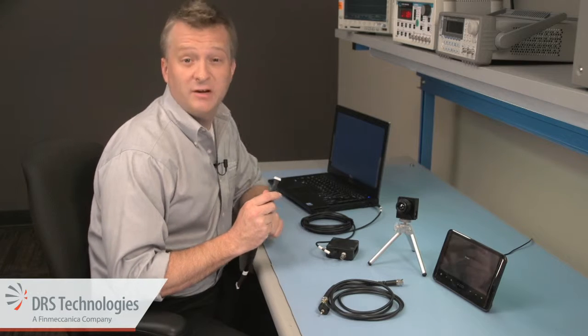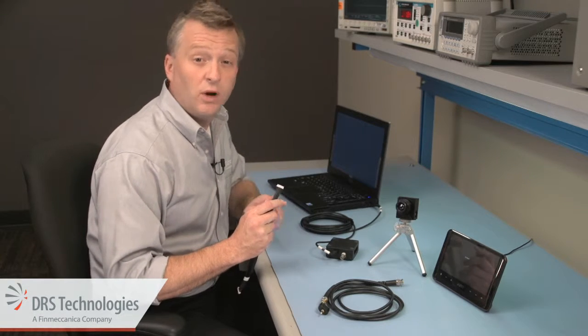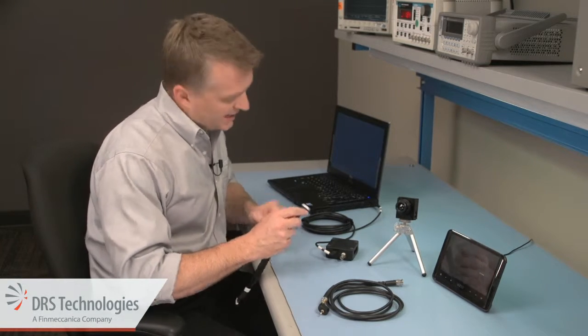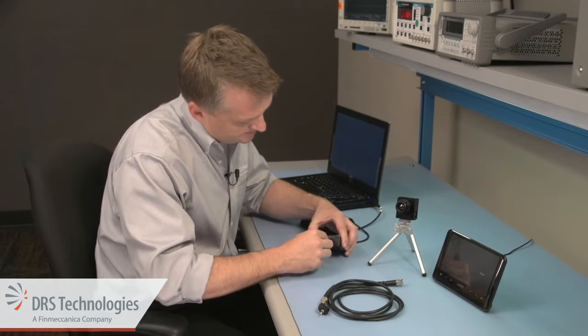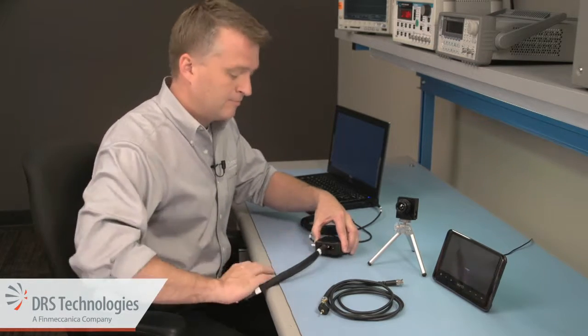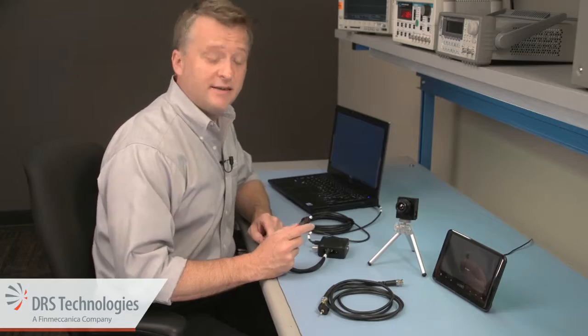Now the connectors on the camera interface cable are keyed so they only go in one way. Plug one end into the breakout box and plug the other end into the camera.